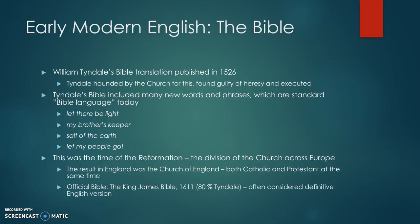This was the time of the Reformation, which was the division of the church across Europe. In England this resulted in the creation of the Church of England, which was a little Catholic and a little Protestant at the same time. The official Bible was the King James Bible from 1611, which was 80% Tyndale's, and this is today considered the definitive English version.